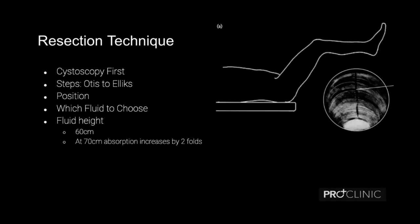Many residents conclude that Otis is mandatory before using the resectoscope, but if you feel the lumen is wide enough then we don't need an Otis. If we feel there is a compromise, then Otis is very good — we cannot compensate with simple dilation or forcing the scope in, because forcing creates an irregular injury leading to a denser stricture. As you can see in the diagram, when we use Otis, the final healing is with a very fine line. The position also matters — many people use exact lithotomy, but we don't need a very tight lithotomy; keeping the legs a little more obtuse allows better patient comfort, less chance of nerve injury, and is comfortable for the surgeon as well.